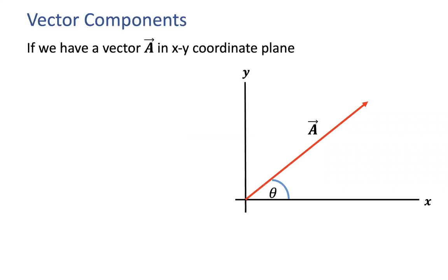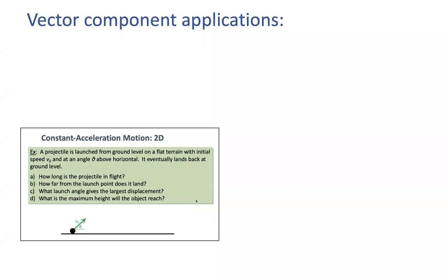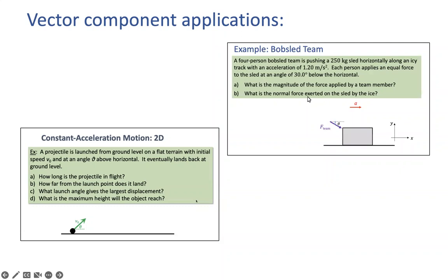In this video I talk about why we need vector components. Whenever we have a vector in two dimensions — x-axis, y-axis — with an angle, we need to find the x-component and y-component in different scenarios. As you move through the semester, you will encounter projectile motion problems and problems related to Newton's laws where a force is applied at an angle. This is why we need to learn how to get the x and y components.